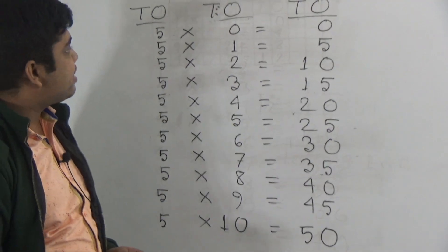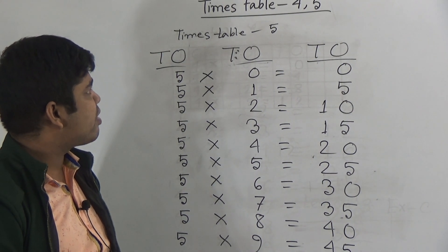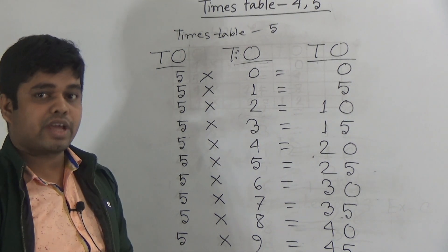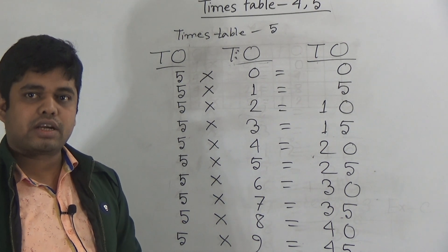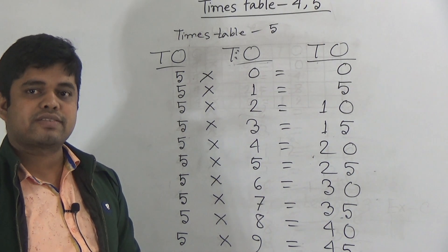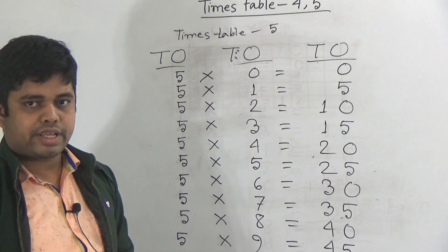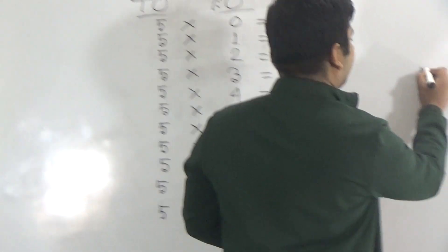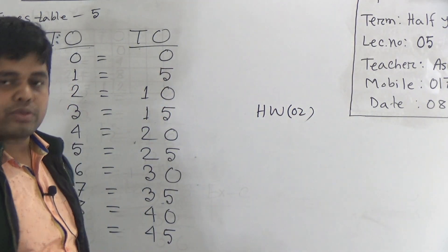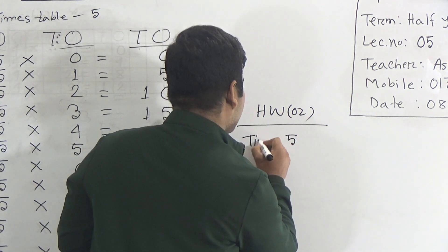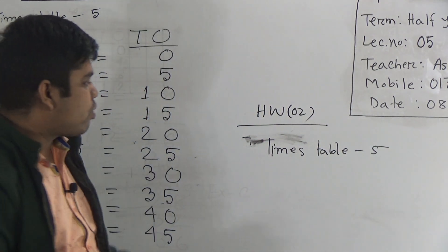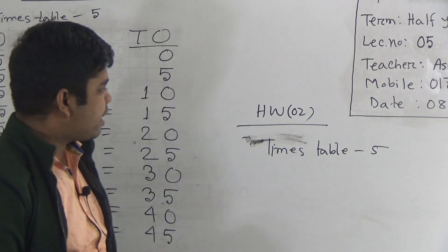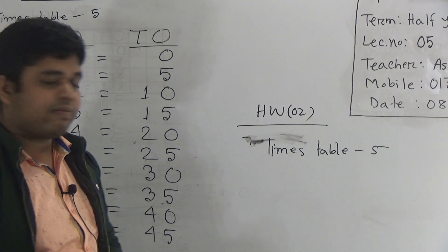So my students, you must memorize this just like this way. I hope you have understood how to write times table in your CW copy and how to memorize times table 4 and 5. You must memorize this very carefully because if you do not memorize times table, then you cannot do division or multiplication. Times tables are all mandatory and very essential. Now notice, today is our SW number 2. Only times table 5 will be your SW — I repeat, only times table 5 will be your SW.